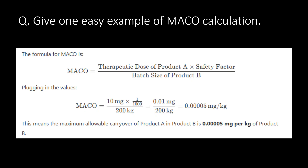Give one easy example of MACO calculation. Consider the therapeutic dose of a product as 10 mg, safety factor as 1000, and batch size of the next product as 200 kg. With the mathematical calculation, we get the value as 0.4 to 0.5 mg per kg. This means the maximum allowable carryover of product A in product B is 0.4 to 0.5 mg per kg of product B.